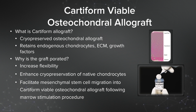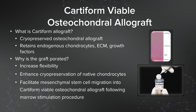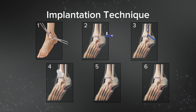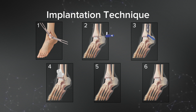Cartiform is a cryopreserved osteochondral allograft, so we usually have to order it in for our cases, and most of these will be larger lesions that we're putting Cartiform into. The Cartiform graft retains the endogenous chondrocytes, extracellular matrix, and growth factors, and this is why I think it's helpful for these cases. The implantation technique is fairly easy but does require more of an open procedure where you will curettize the lesion and then fix the Cartiform graft to the underlying bony anatomy.